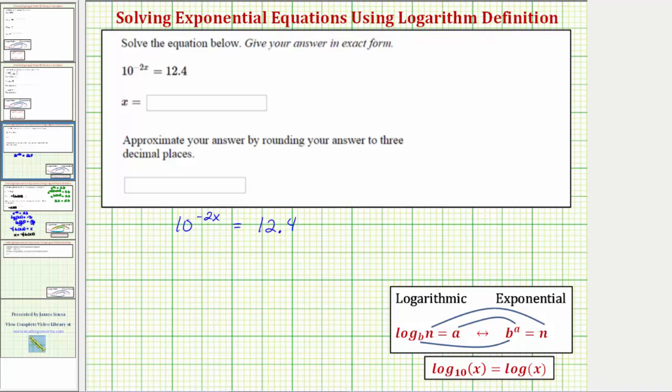For this example, we'll be using the definition of a logarithm, where this log equation and this exponential equation are equivalent, where b is the base, a is the exponent, and n is the number.